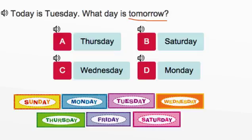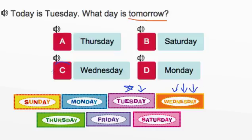Now we want to know what day is tomorrow if today is Tuesday. So let's find Tuesday in the days of the week. As you can see, Tuesday is right here. Tomorrow simply means the next day after Tuesday. If we take a look at the days of the week, we can see that the next day after Tuesday is Wednesday. That means that Wednesday is our answer.